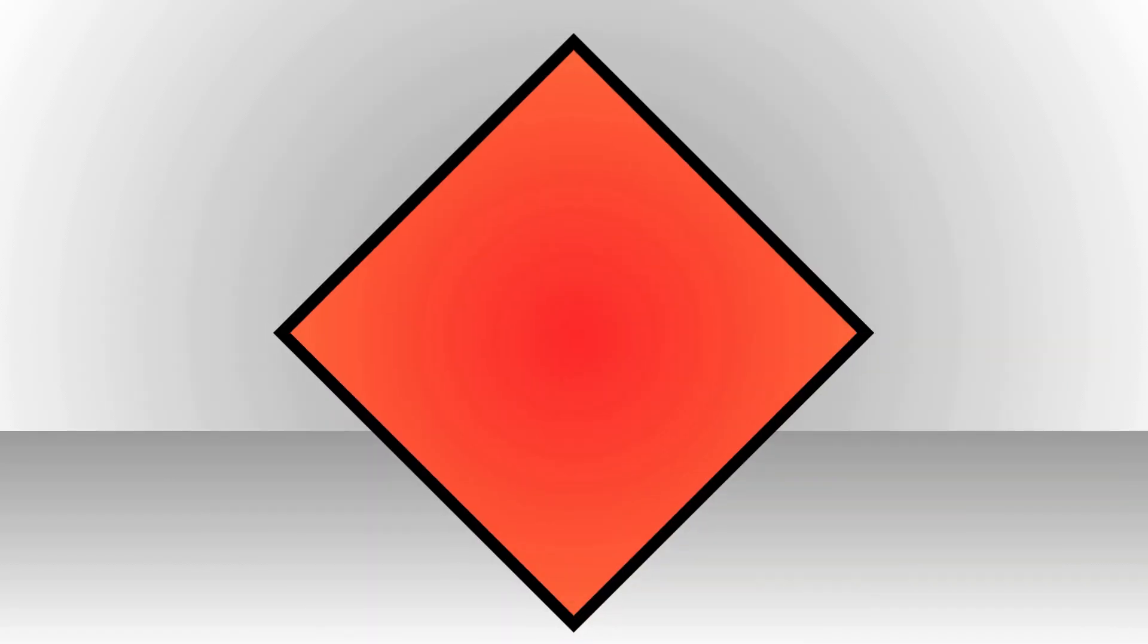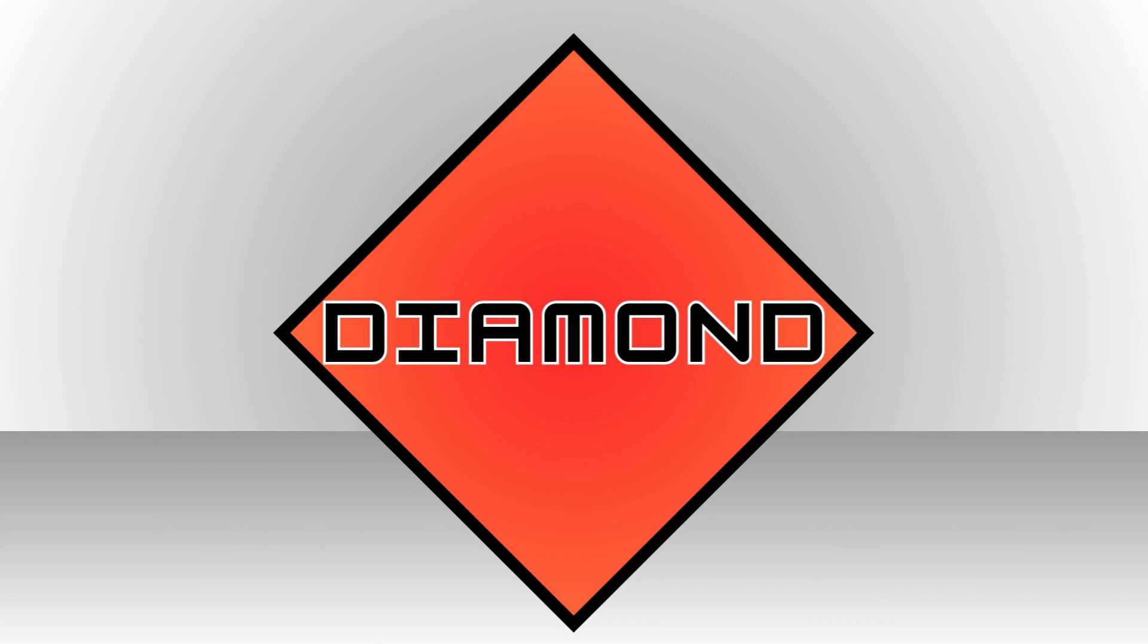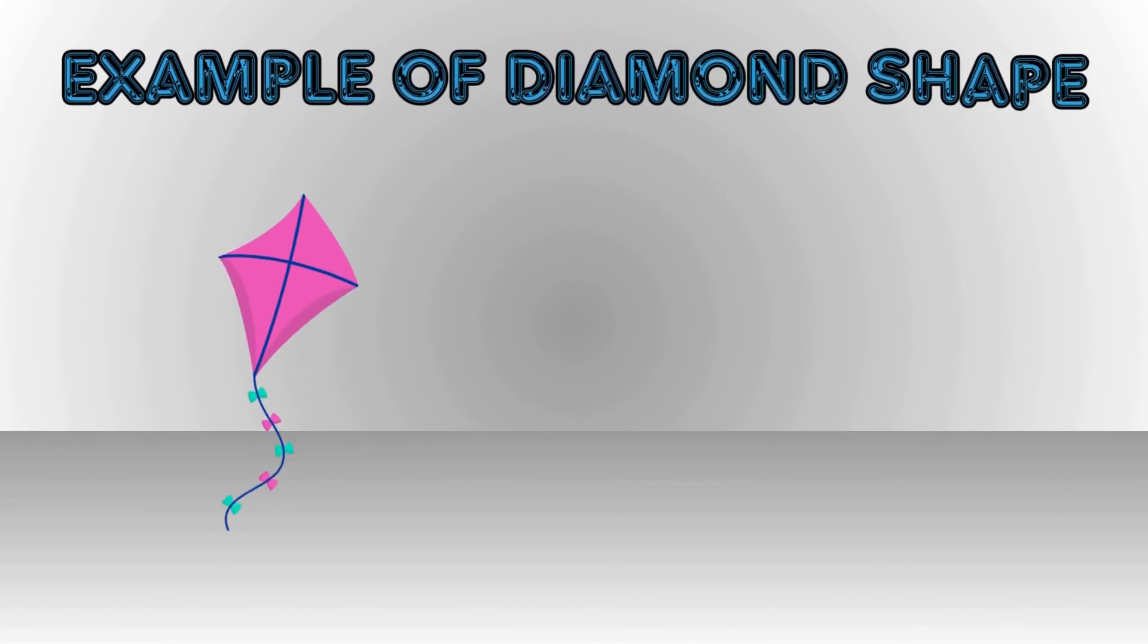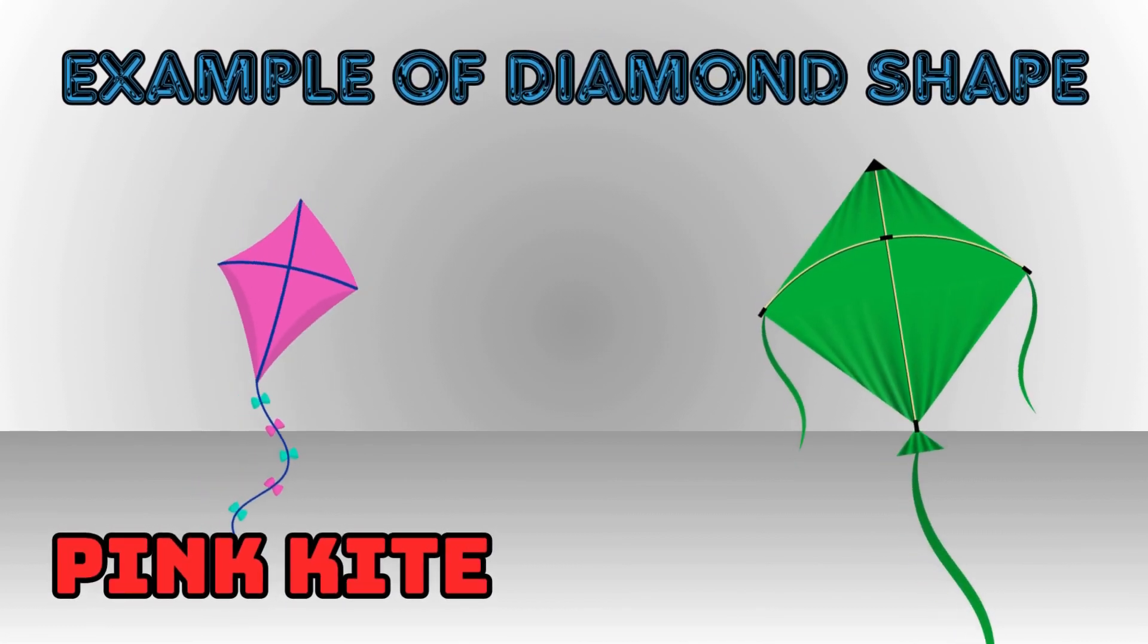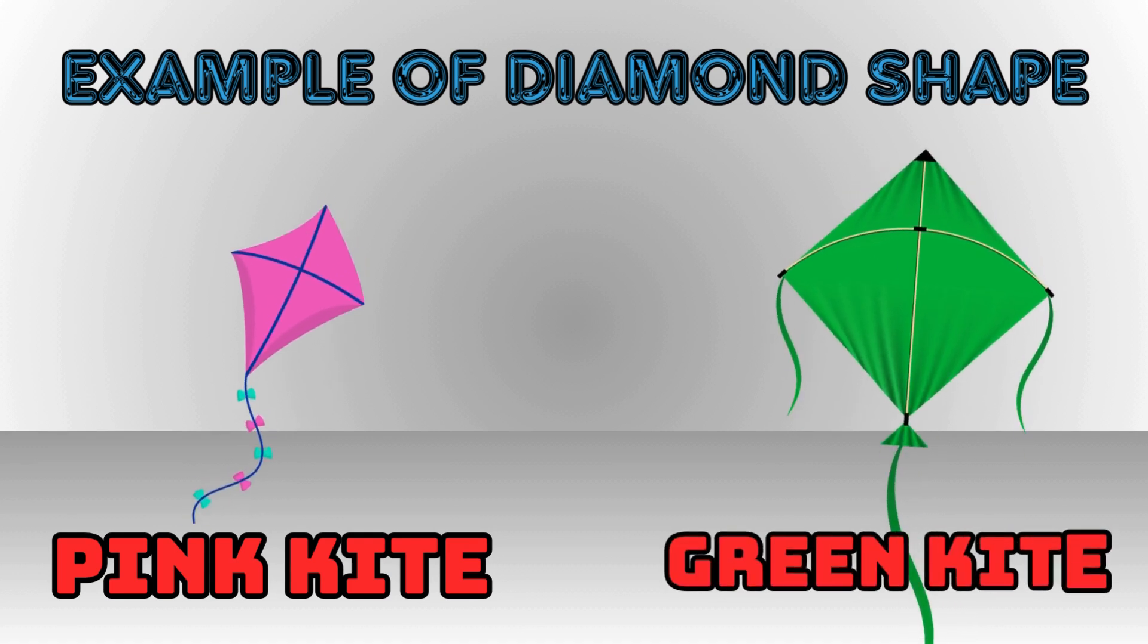This is a diamond. Example of diamond shape: pink kite and green kite.